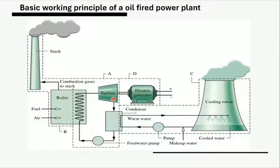The condenser needs constant cool liquid, which is supplied with the help of a cooling tower. The heated water from the condenser outlet is sprayed in the cooling tower, which induces a natural air draft and the sprayed water loses heat. This is how a colder liquid is always provided at the condenser inlet.